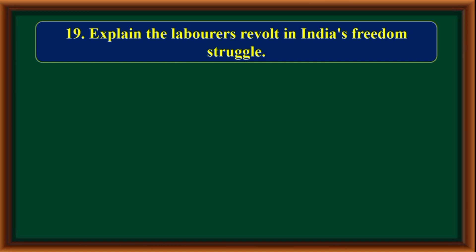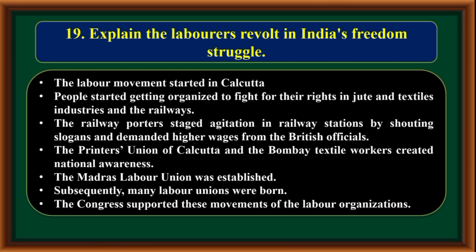Explain the laborers' revolt in India's freedom struggle. The labor movement started in Calcutta. People started getting organized to fight for their rights in jute and textile industries and the railways. Railway workers staged agitations in railway stations by shouting slogans and demanded higher wages from the British officials. The printers union of Calcutta and the Bombay textile workers created national awareness. The Madras Labor Union was established, and subsequently many labor unions were born. The Congress supported these movements of the labor organizations.